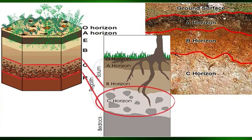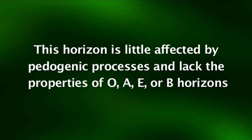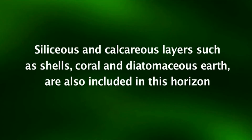The C horizon constitutes the transition layer between the actual soil and the parent bedrock. It is less weathered than the upper horizons and contains partially weathered parent material of the bedrock, or sometimes materials transported by glaciers, wind, or water. This horizon is little affected by pedogenic processes and lacks the properties of O, A, E, and B horizons. Most of such horizons are mineral layers, but some siliceous and calcareous layers such as shells, coral, and diatomaceous earth are also included.